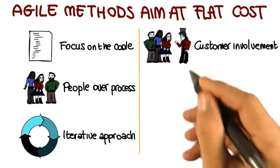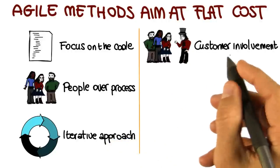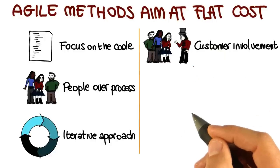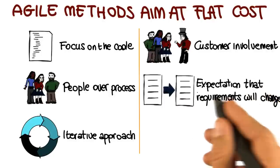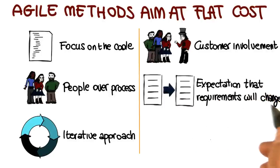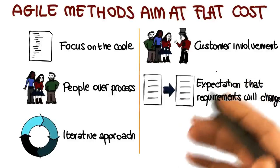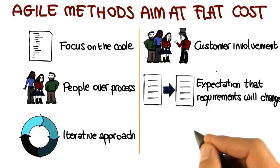And to be able to do so, agile methods aim to involve the customer throughout the development process. Finally, there are two more principles I want to mention, which are cornerstones of agile methods. The first one is the expectation that requirements will change, and therefore we need to be able to handle such changes. We can't count on the requirements to be still and immutable.